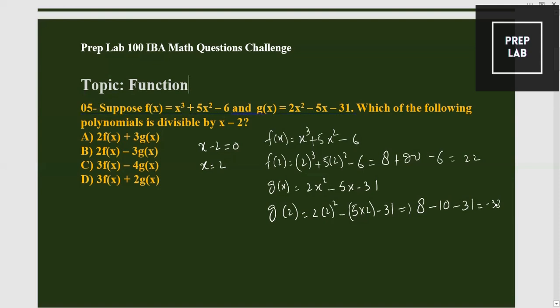The options are given. We know that if it is divided by x - 2, the value will become 0. So just put the value in those functions. For example, if you are putting the value in option A, so here times 2, you have found the value of f(x) which is equal to 22, minus, and you have